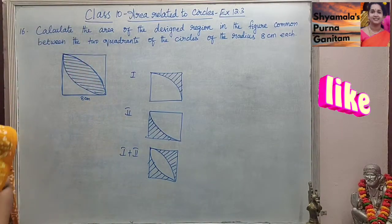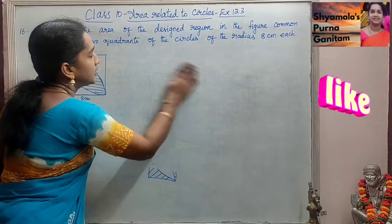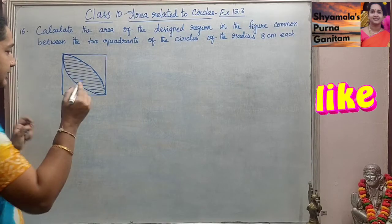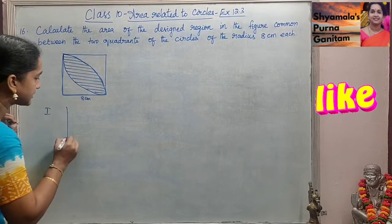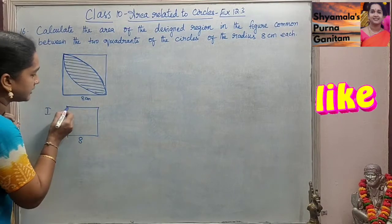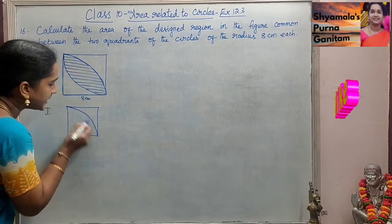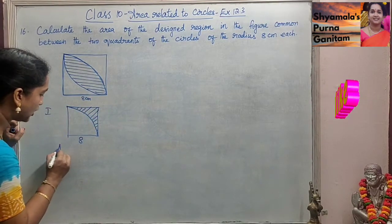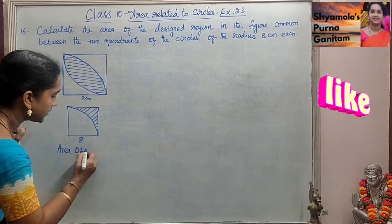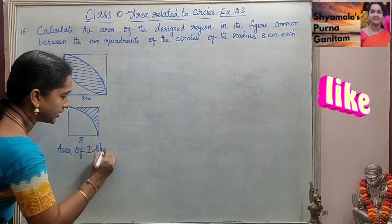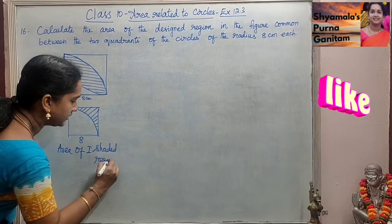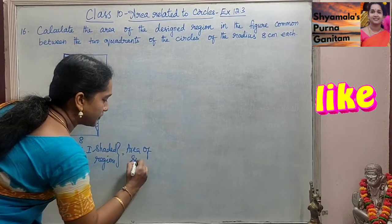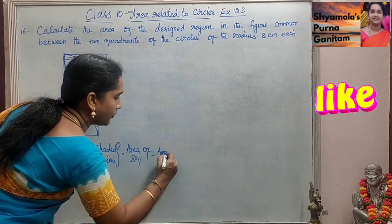For better understanding, I will be drawing part by part. The first part is: a square of 8 cm. I am going to find the area of the first shaded region. Area of first shaded region equals area of square minus area of quadrant.